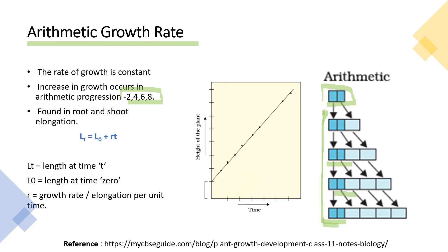Arithmetic growth rate is found in root and shoot elongation. The formula for this is: LT = L0 + RT, where LT is length at time T, L0 is initial length, and R is the growth rate. The graph representing arithmetic growth rate plots height of the plant against time and appears as a straight line.